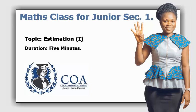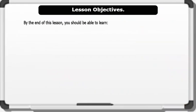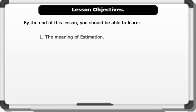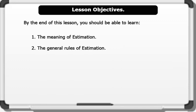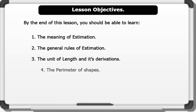Let's check out the lesson objectives. By the end of this lesson, you should be able to learn: 1. The meaning of estimation, 2. The general rules of estimation, 3. The unit of length and its derivations, 4. The perimeter of shapes. Please pay attention as we go through the lesson together.